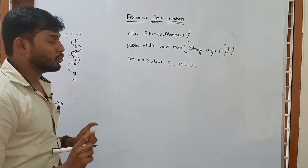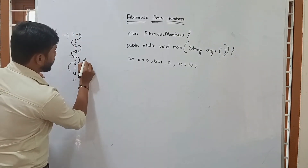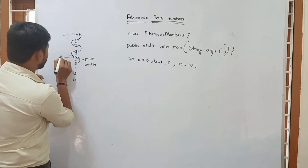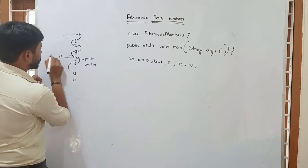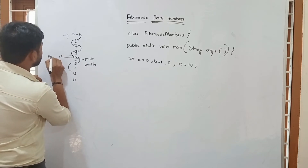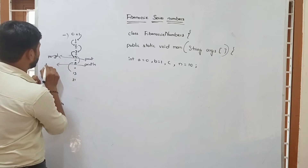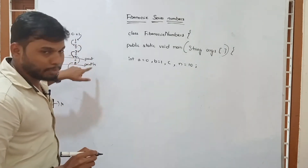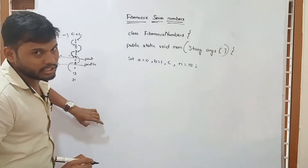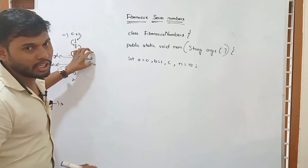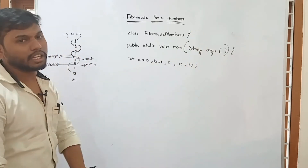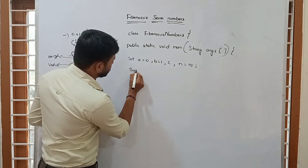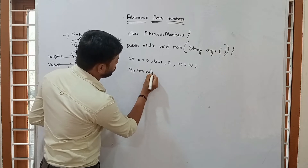Before the loop, we need to know the difference between print and println. Print is used for horizontal output — it keeps printing on the same line. Println means next line — after each value it moves to the next line. When we use println, after printing a value it comes to the next line. When we use print, it continues on the same line in a linear execution.